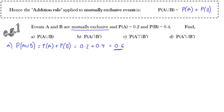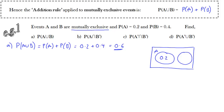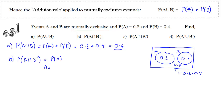Part B: the probability of A intersection not B. It's helpful to consider the Venn diagram. There are two circles, they don't overlap, so the only other region is the outer region of 0.4. If we want the intersection of A with not B, look at the region in A but not in B — that's the whole of A. Therefore it's just 0.2.